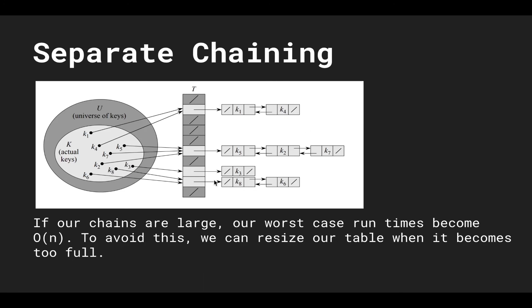So again if our chains are large our worst case runtime has now become O of n. To avoid this we can resize our table when it becomes too full. So when we see that our table is getting kind of full we want to resize it and then of course rehash our values so then our chains aren't too big.